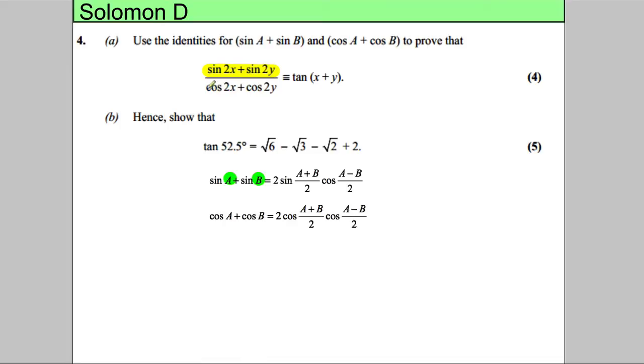And similarly, cosine 2X plus cosine 2Y could be cos A, cos B where A is 2X and B is equal to 2Y. So we're going to use A to be 2X and B to be equal to 2Y.